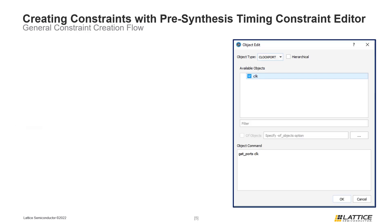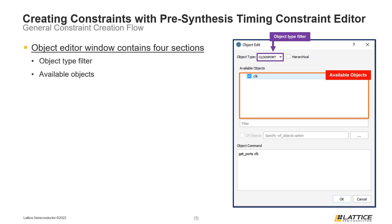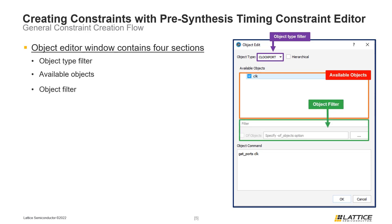Once the object entry field has been selected, an object editor window will appear. The object editor window is used to select an object for the constraint being created. At the top of the window is the object type filter — selecting this drop-down allows users to filter for the type of object they want to create a constraint for. Underneath the object type filter are the available objects. Depending on the object type filter selected, different types of objects will appear. Users can select which objects to constrain by enabling or disabling the checkbox next to each object's name.